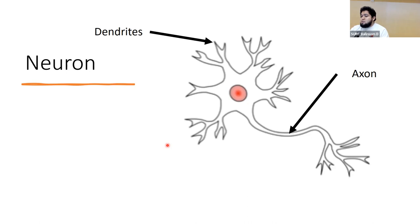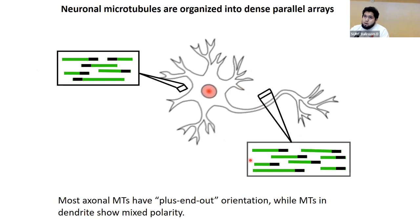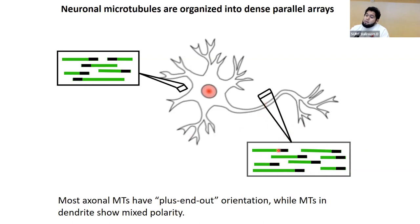A neuron is composed of two specific components: an axon and dendrites. This red dot represents the cell body of a neuron, and the other end represents the axonal terminal. Microtubules are important for neurons because they maintain the structure of axons and dendrites. They also develop a uniform polarity pattern, which helps organize the traffic of organelles. Microtubules inside the axon have a plus-end-out orientation, meaning they like to move to the right side — that's what we represent as a uniform polarity pattern.